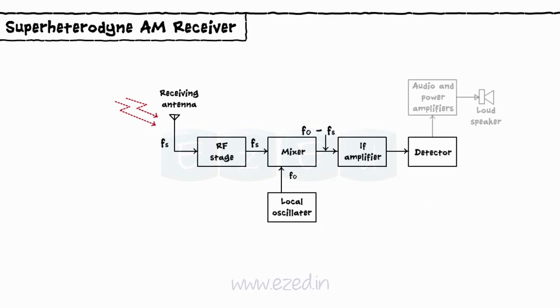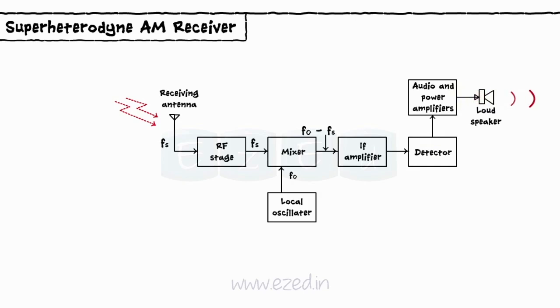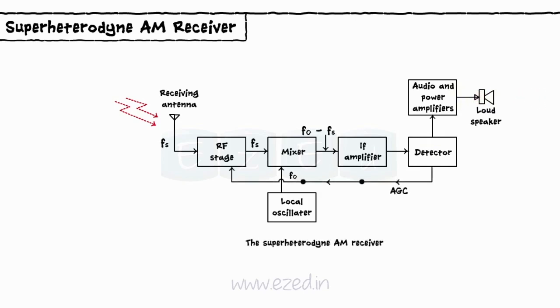Detector: The amplified IF signal is detected by the detector to recover the original modulating signal. This signal is then applied to the loudspeaker.